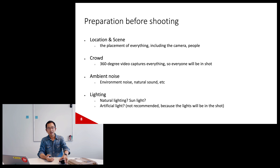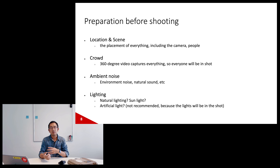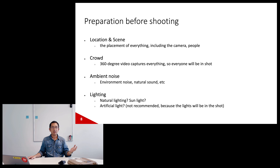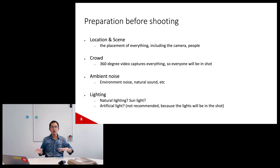Another consideration is crowd control — the camera captures everything, so you don't want unrelated people in the scene disturbing the content. The same applies to ambient noise, so check if someone else is talking or something is happening in a different area. For lighting, natural light is recommended — a room with a big window gives good light. If you need artificial lights, think about how to set them up, because everything in the scene including tripods, lights, and cables will be captured, making it look like a filming setup rather than a realistic place.